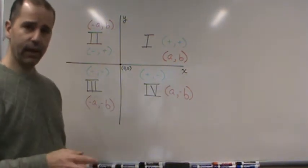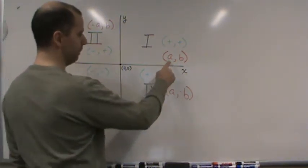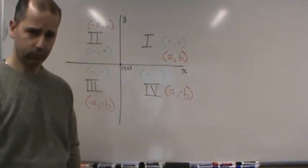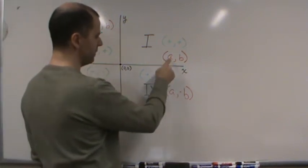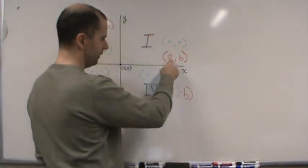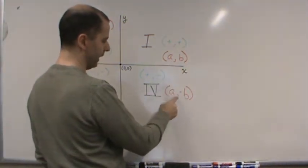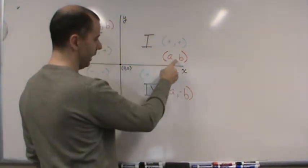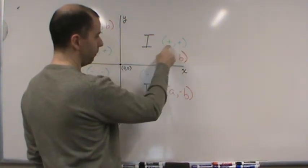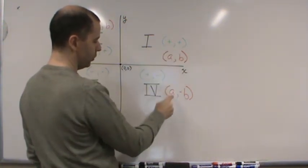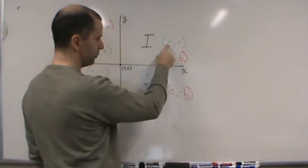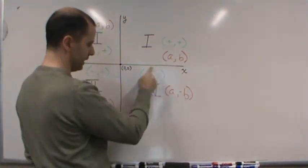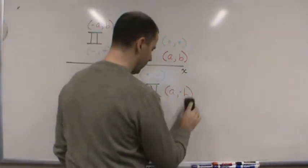If you're given a point, let's say I give you a point (a,b) that's in quadrant one, and then I say tell me where (a, -b) is located. Well, if you know that (a,b) is in quadrant one, you know that they're both positive. So if you go to (a, -b), now it goes from positive positive to positive negative, which means that it has to be in quadrant four.